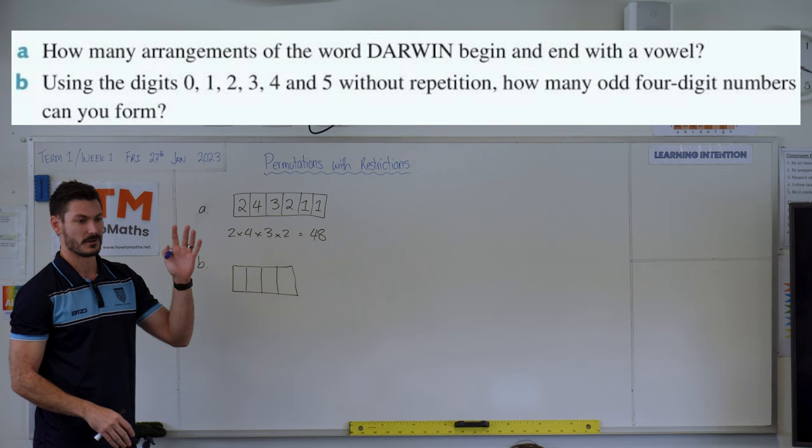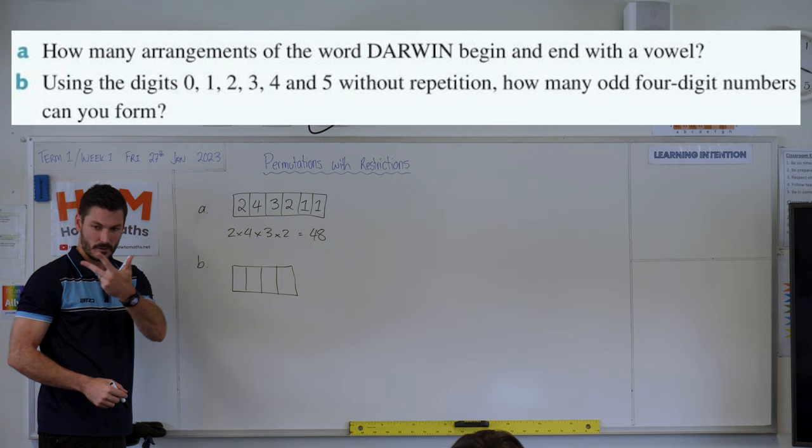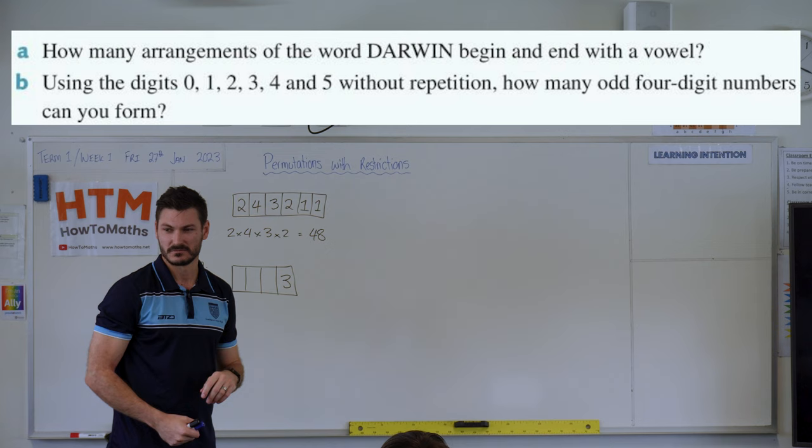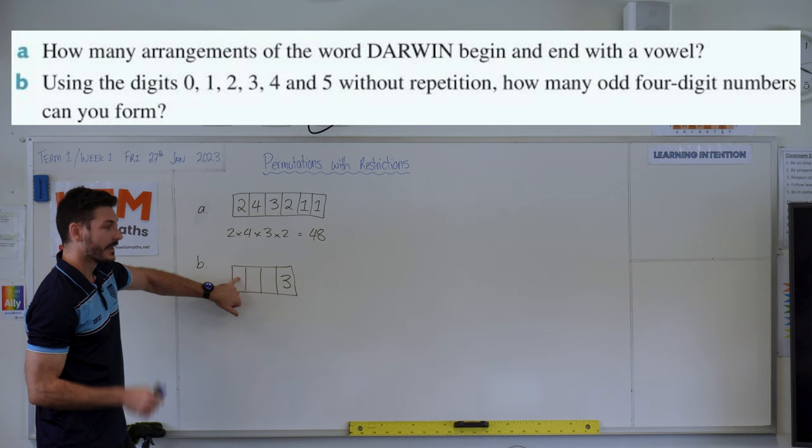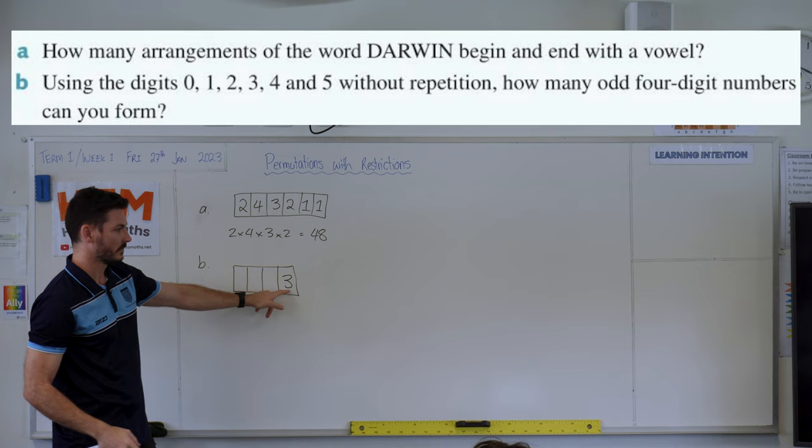So an odd number can only end in this case with a 1, a 3 or a 5. So we have to place the odd number first at the end. Three options. There's, I guess, sort of one more restriction in that you can't put a zero at the start, because then it wouldn't be a four-digit number, I guess it'd be a three-digit number. So when we're actually looking at this, keeping in mind we've used one of 1, 3 and 5, so one of them is gone. And we can't use zero, so we can use two of the odds, whatever's left, and then 2 and 4. So we've only got four options to start with.